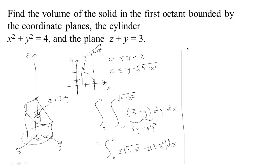Okay, now this is really two integrals that we need to do. The first one is the integral from 0 to 2 of 3 times the square root of 4 minus x squared dx, and the other one is minus 1 half times the integral from 0 to 2 of 4 minus x squared dx.